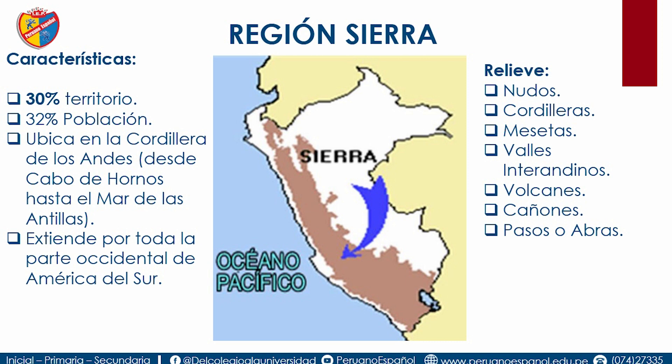Los volcanes están principalmente en los departamentos de Arequipa, Moquegua y Tacna. En Arequipa el Misti, en Moquegua el Ubinas, en Tacna el Tutupaca y en Ayacucho el Sarasara. Los cañones permiten encontrar centrales hidroeléctricas: el Cañón del Pato en Áncash, el Cañón del Colca en Arequipa y el Cañón más profundo, el Cotahuasi, también en Arequipa. En pasos o abras, el paso más alto ferrocarrilero es el Ticlio o Antícona, y el paso más bajo es el paso de Porcuna.